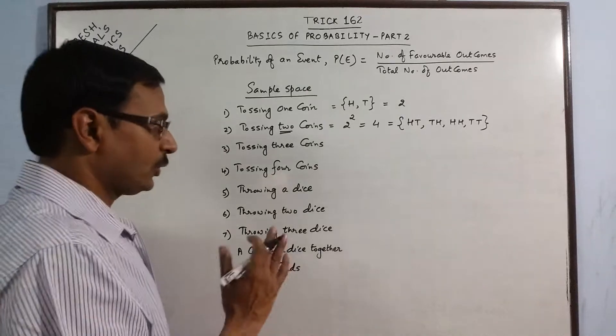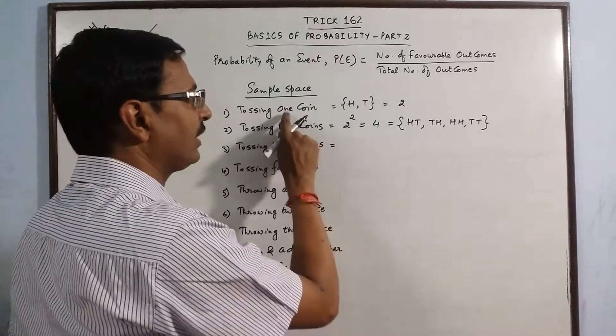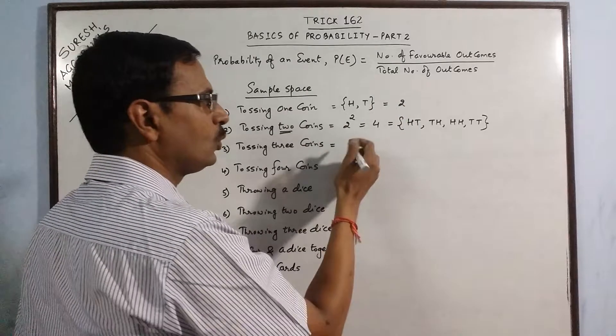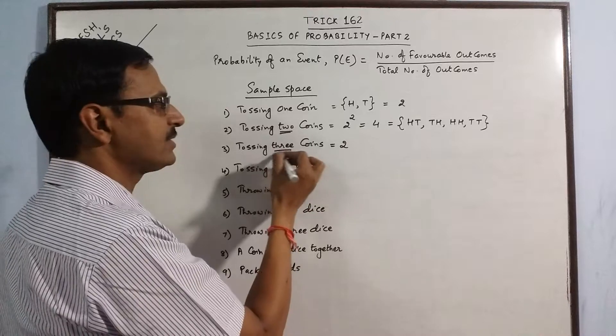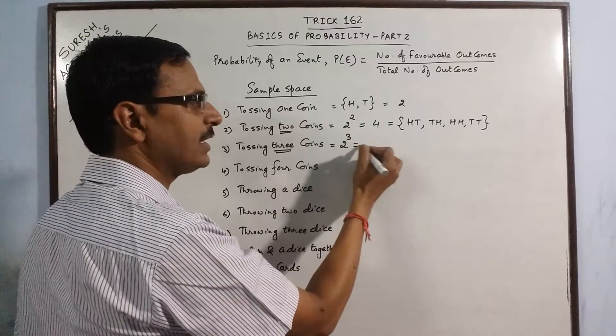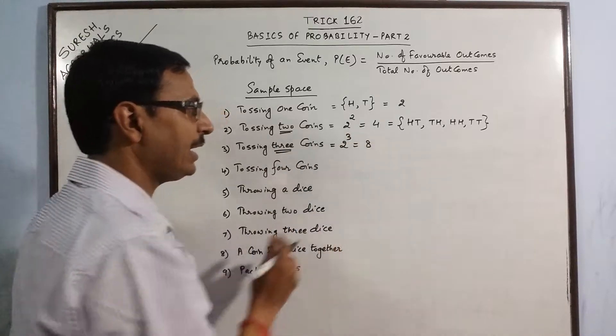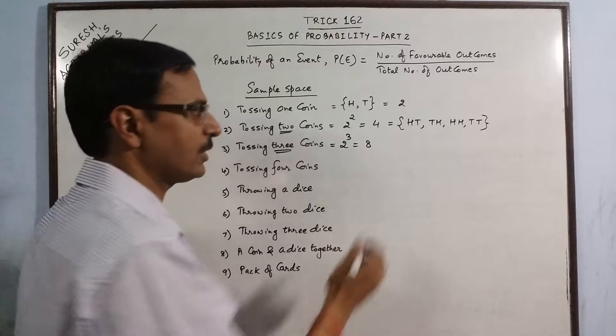Now you can generalize this. With one coin we got 2 outcomes. For 3 coins, it is 2 raised to the power 3, which gives us 8 possible outcomes.